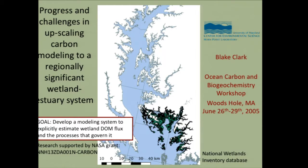So this image is of the Blackwater and Nanakook River Wildlife Refuge and Wetland System, or Wetland Area, in Chesapeake Bay. This is the Maryland region of Chesapeake Bay.